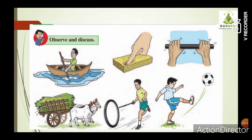Observe the various pictures. In the first picture, the person is rowing a boat. To give movement to the boat, he has to apply a force on it using an oar. He pushes the oar backward so that the boat moves forward. In the next picture, a person is pressing a sponge with a finger — a small amount of force is applied. In the next picture, to break a stick, a force must also be applied.